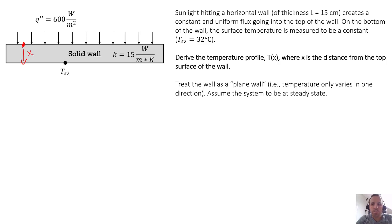So we're going to treat this as a plane wall, assuming temperature only varies in one direction, which would be that downward x direction, and we're going to assume that the system is at steady state. This is really similar to another example problem that we solved, except now we're being asked what the temperature profile is - how does temperature change depending on where we are, how deep we are into this wall.